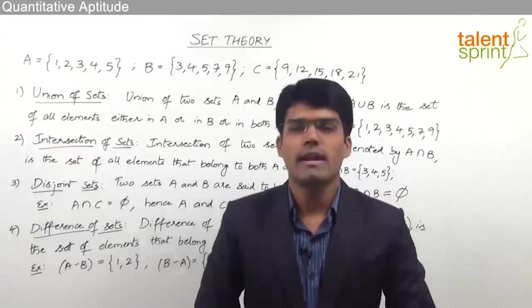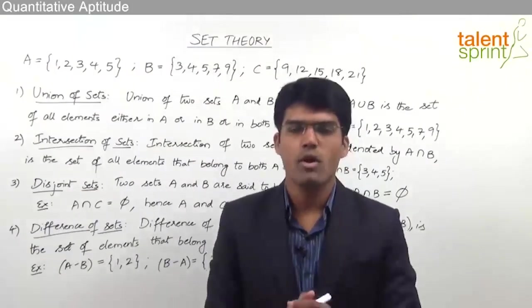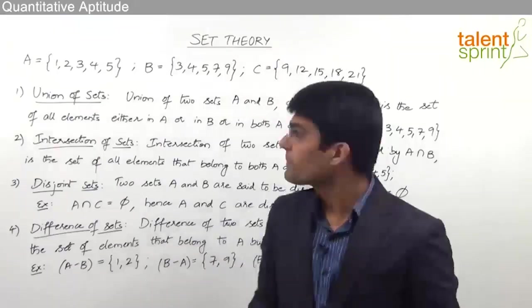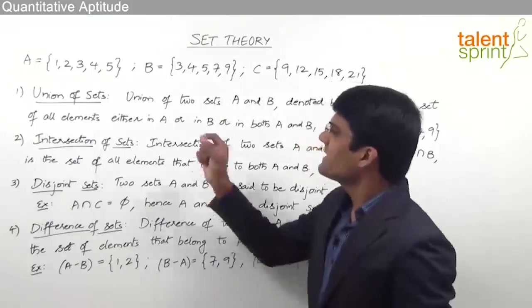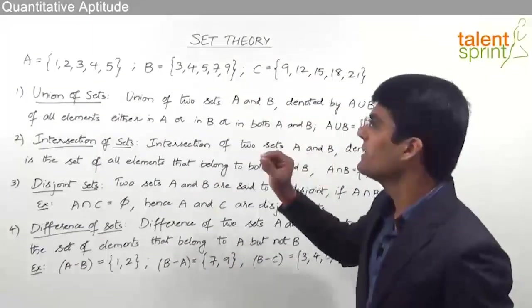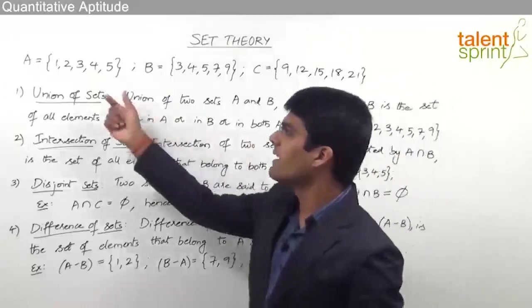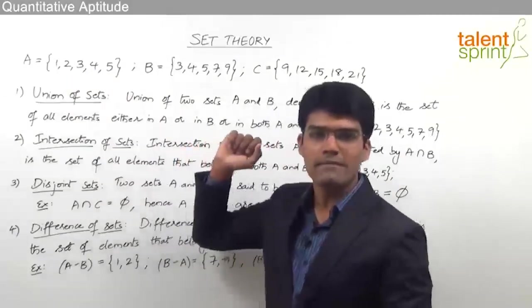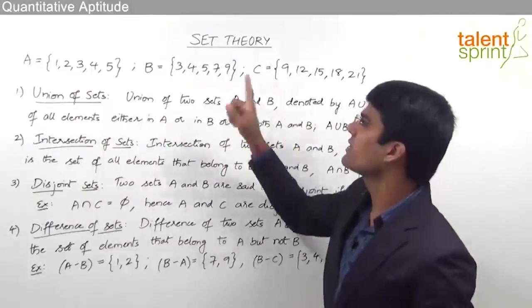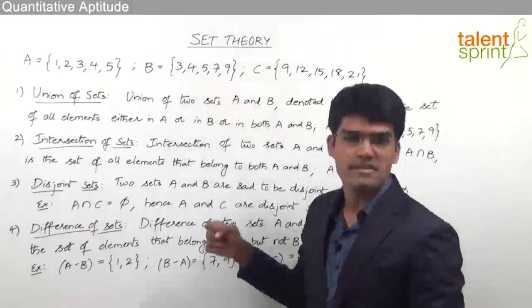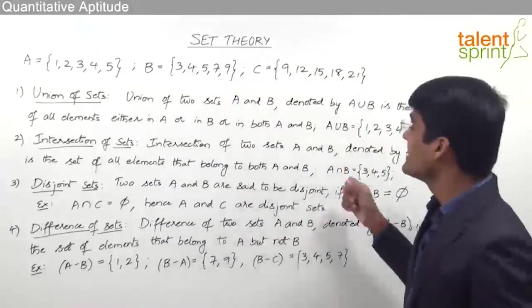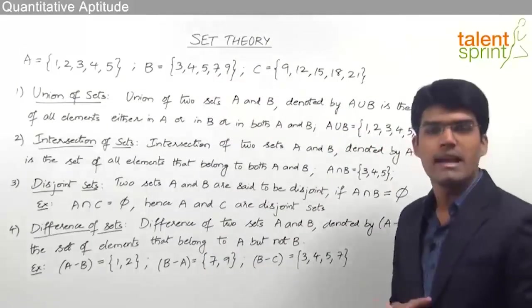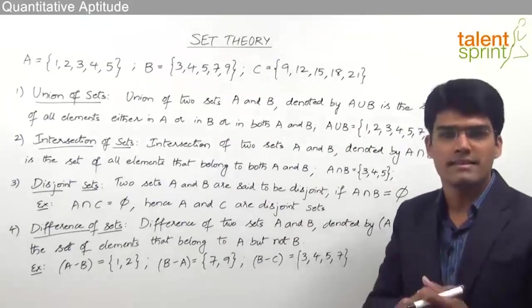Let us now look at some of the important operations that can be performed on two different sets. Let us take three sets: set A with elements 1, 2, 3, 4, 5; set B with elements 3, 4, 5, 7, 9; and set C with elements 9, 12, 15, 18 and 21.